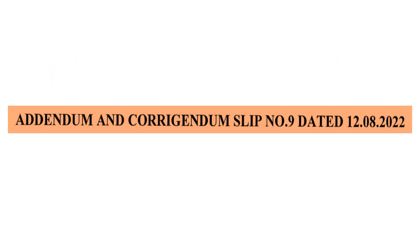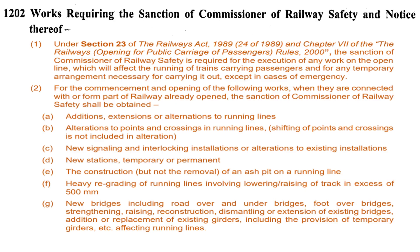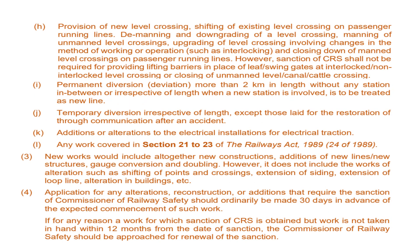As discussed earlier, ACS 7 was superseded by ACS 9. Hence, we will learn ACS 9 instead of ACS 7 so that the latest specification may be encountered. This is the snapshot of para 1202, which is related with the works required to have CRS sanction. Previously, before implementation of ACS 9, there were 4 sub-paras under para 1202, which is now reduced to 3 paras. Let's discuss the new paras.